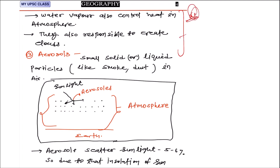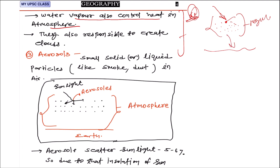What is the importance of water vapor in our atmosphere? Water vapor also controls heat in the atmosphere. The sunlight coming from the Sun is absorbed by water vapor, so it regulates heat at the Earth's surface. Water vapor is also responsible for creating clouds — especially during monsoons, evaporation converts water into water vapor, which forms clouds, and clouds produce rain. This is the basic idea.